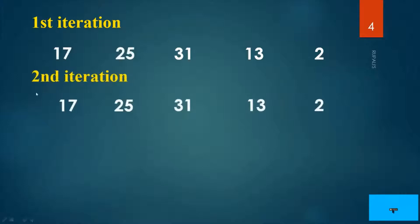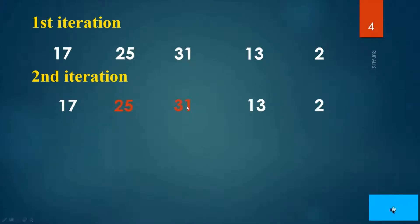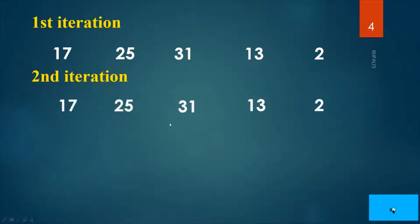In the second iteration, the third element becomes temp. Here temp is 31. You have to compare 31 with the elements before it. Now it comes to the third iteration.